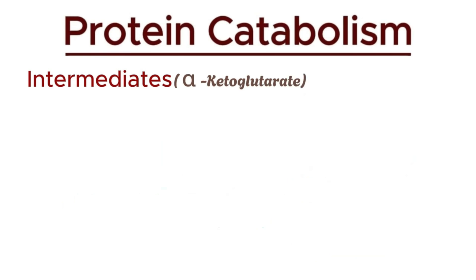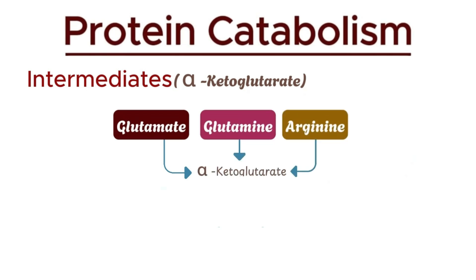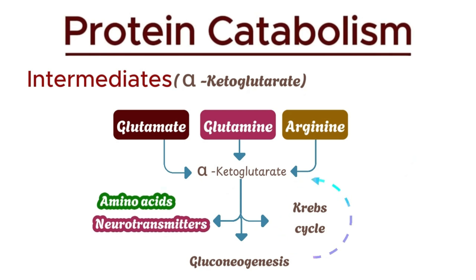Then there's alpha-ketoglutarate. This intermediate is produced by amino acids like glutamate, glutamine, and arginine. Alpha-ketoglutarate is not only a critical component of the Krebs cycle, but also supports gluconeogenesis and the synthesis of other amino acids and neurotransmitters.